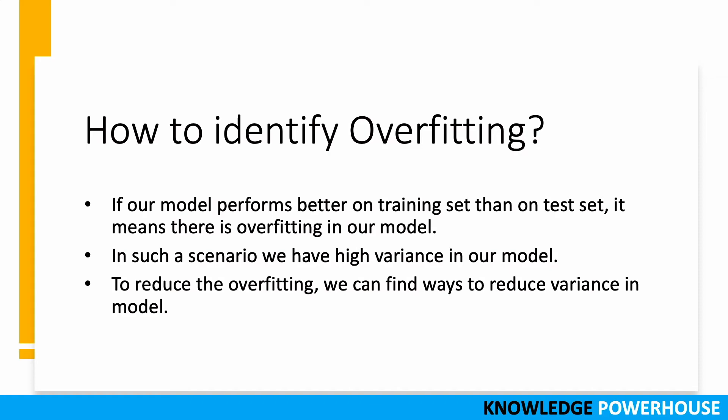How do we identify overfitting? The first simple rule is: if our model performs better on the training set than on the test set, there is overfitting. For example, if we have 100 data points — 50 in training and 50 in the test set — and the model predicts very well on the 50 training points but performs poorly on the test data, that indicates overfitting, and we cannot take that model to production. What we observe is high variance in our model, and to reduce overfitting we have to find ways to reduce that variance.